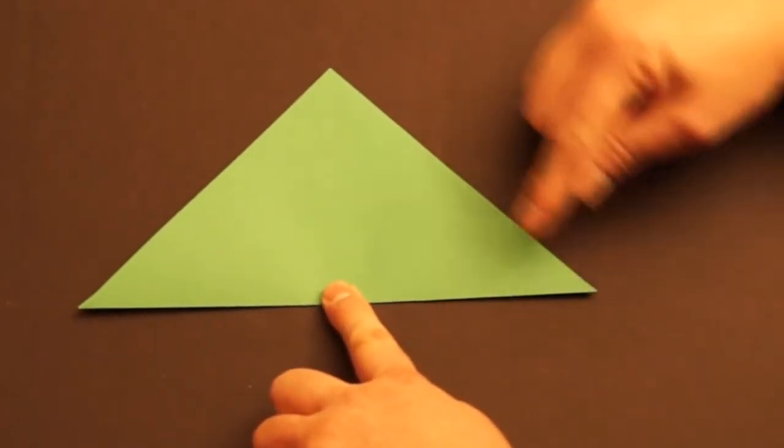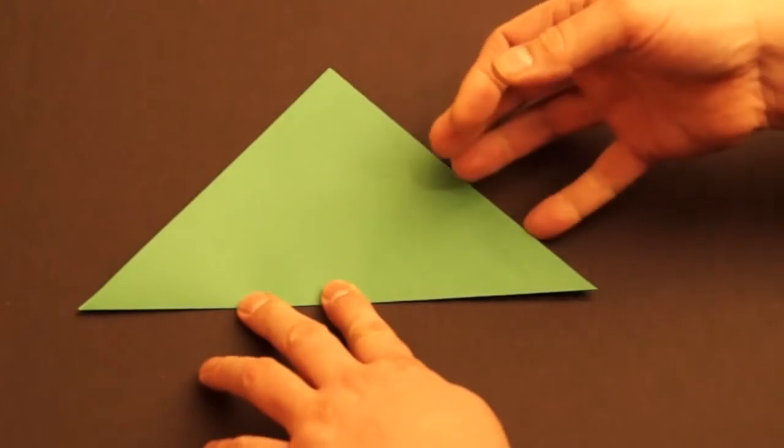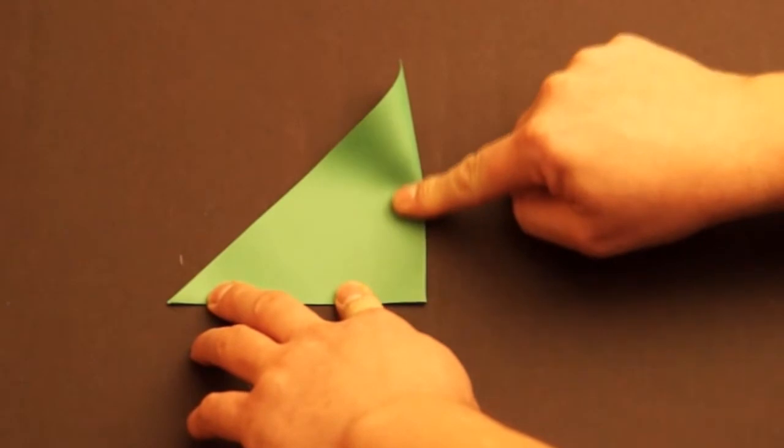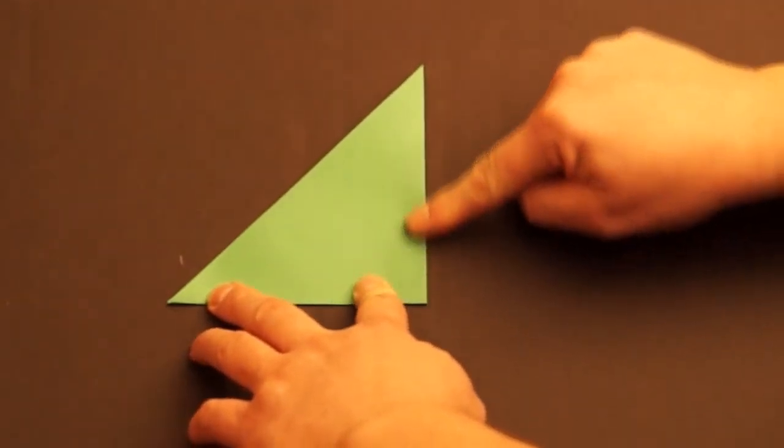Next, take the right corner and fold it over to the left corner. Again, line it up as best you can and press down good on your fold.